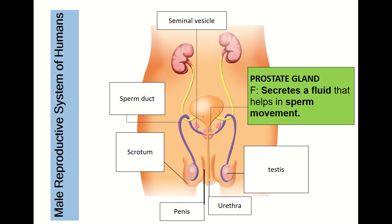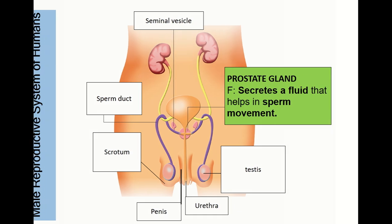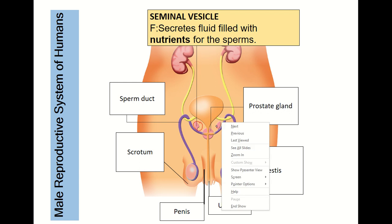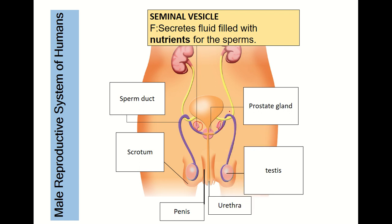The next part is the prostate gland. Its function is to secrete fluid that helps sperm movement. The seminal vesicles function to secrete fluid with nutrients for the sperm.